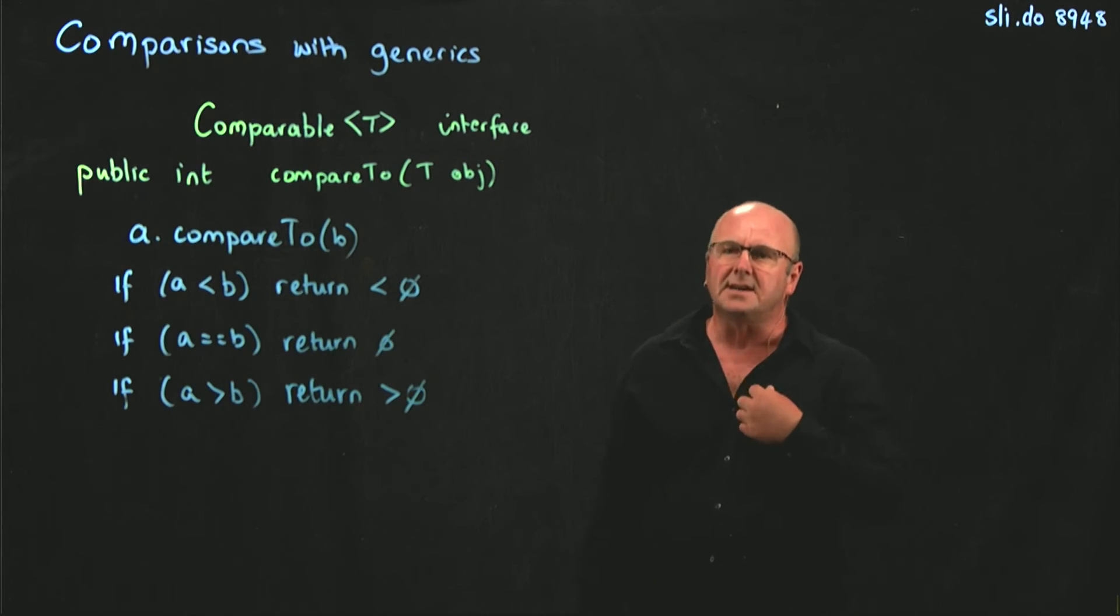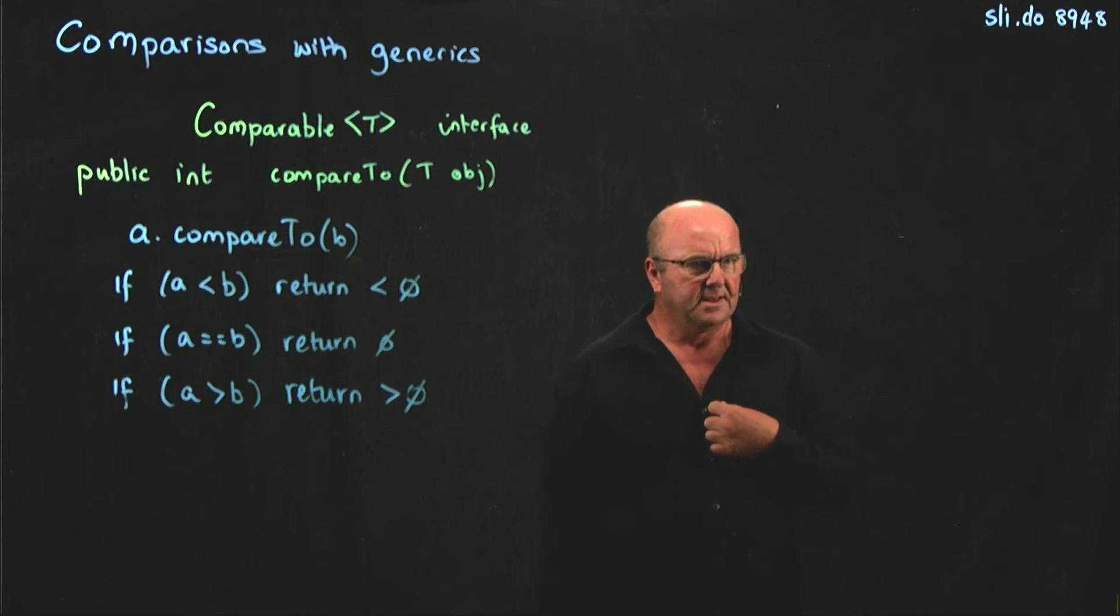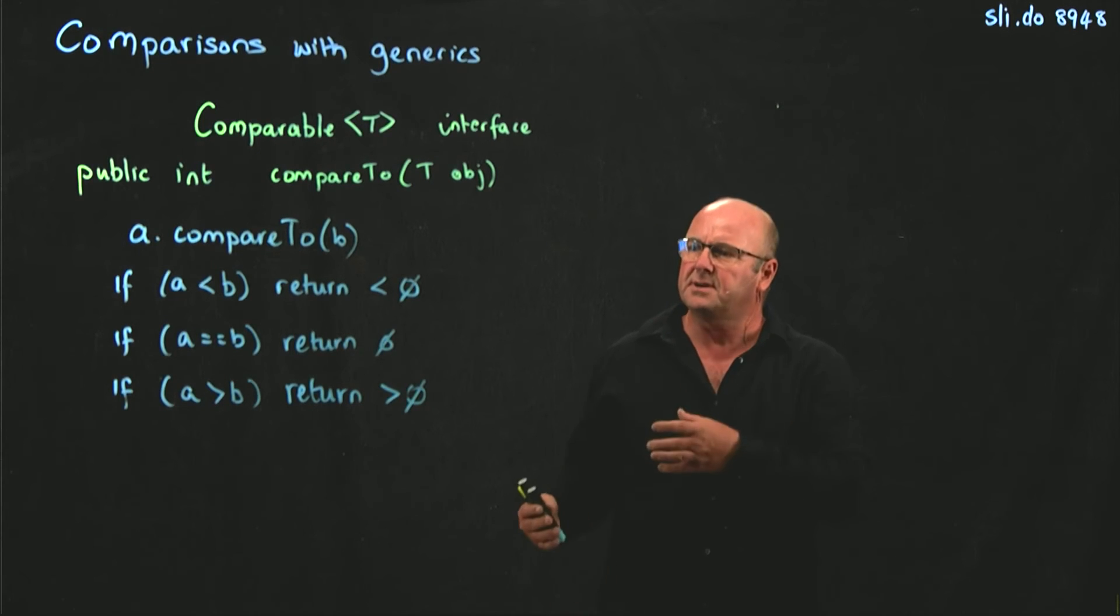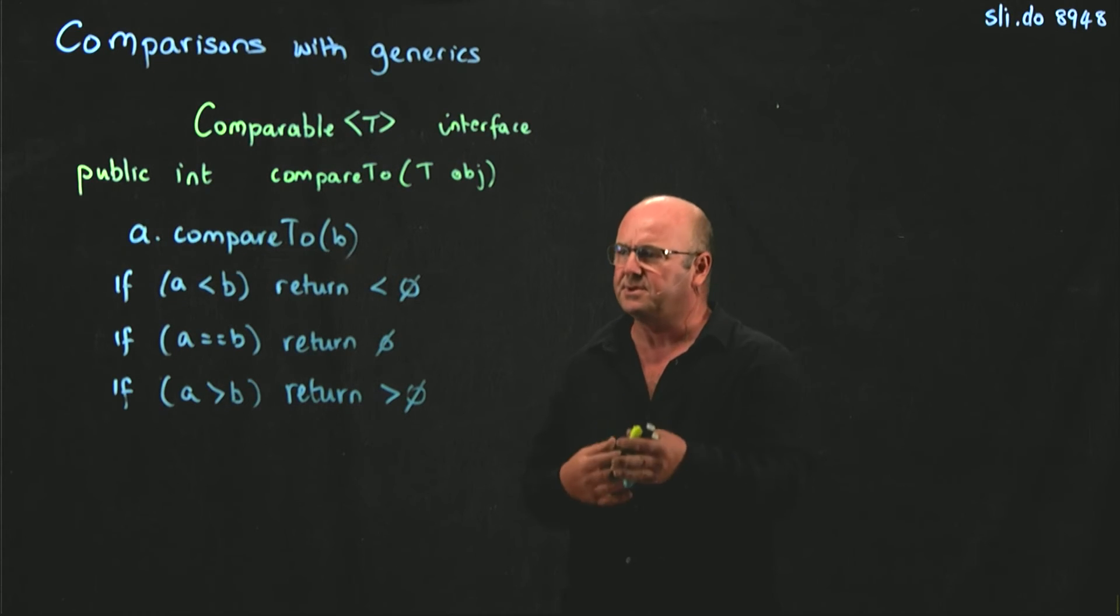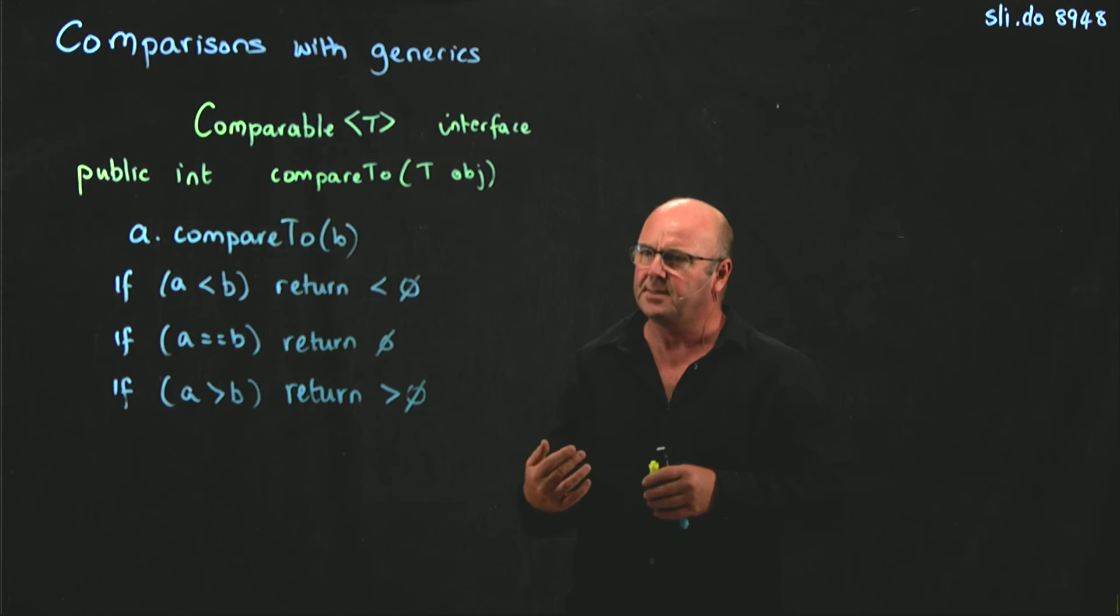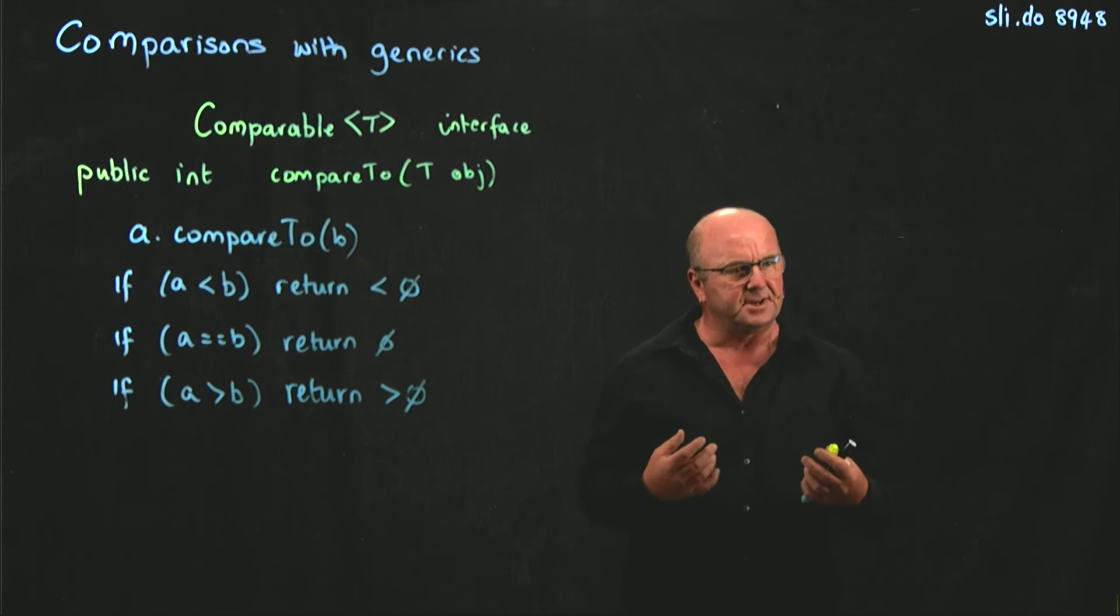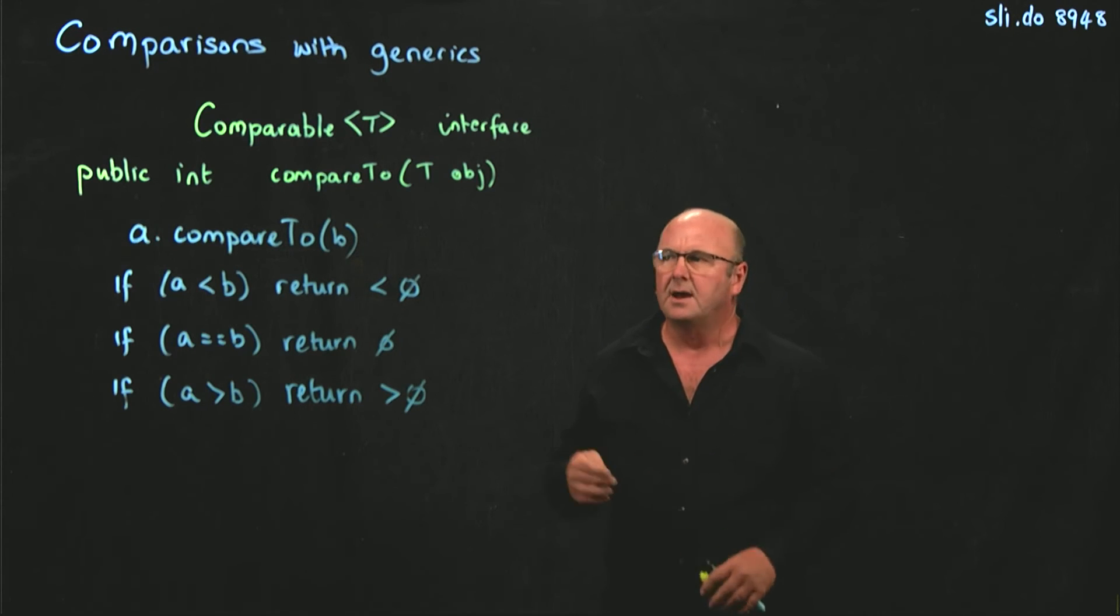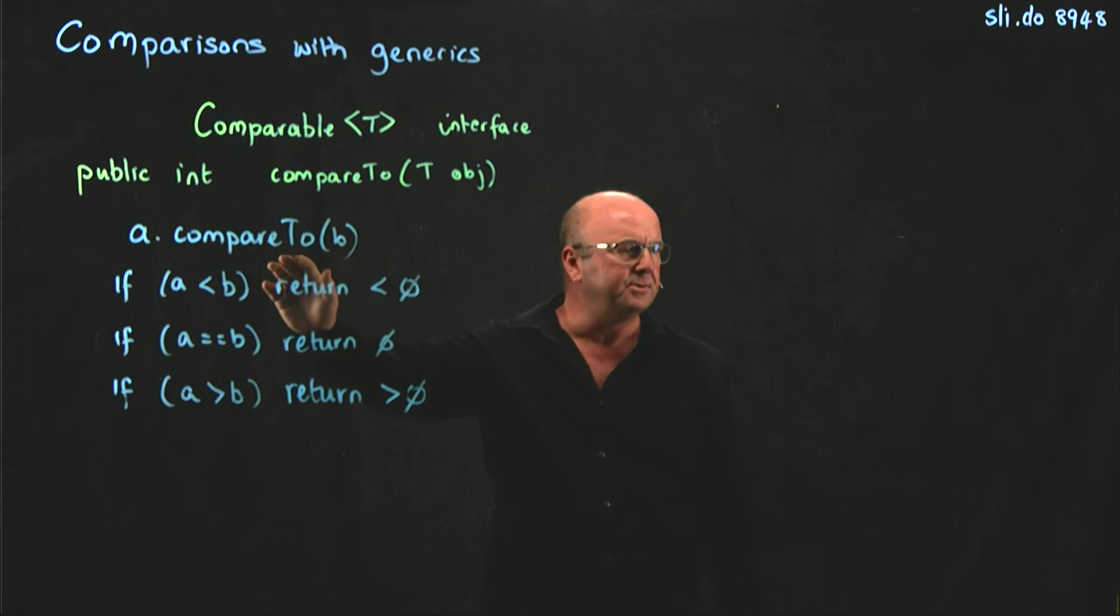So now, as the designer of a data structure, if I want to know whether one kind of monkey is bigger than another kind of monkey, or if one kind of monkey is equal to another kind of monkey, or one kind of string is equal to another kind of string, or if I want to sort my strings, I can call the compareTo method.